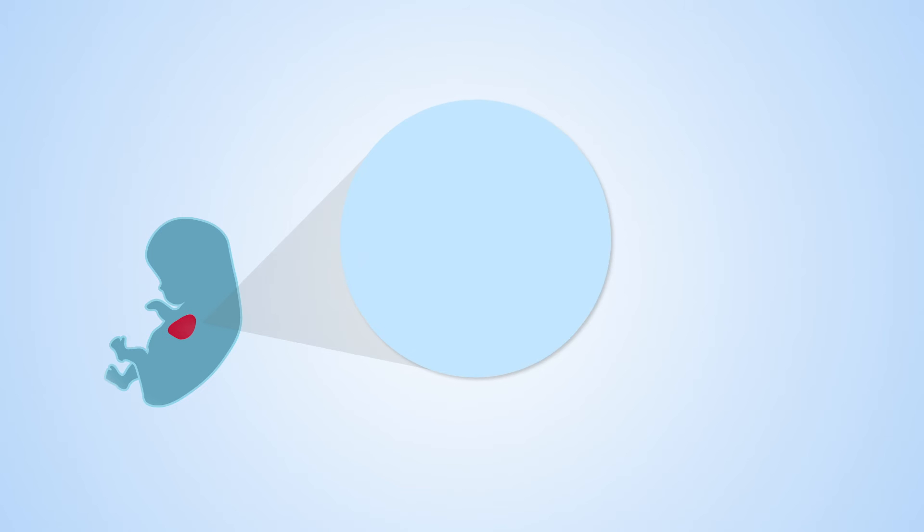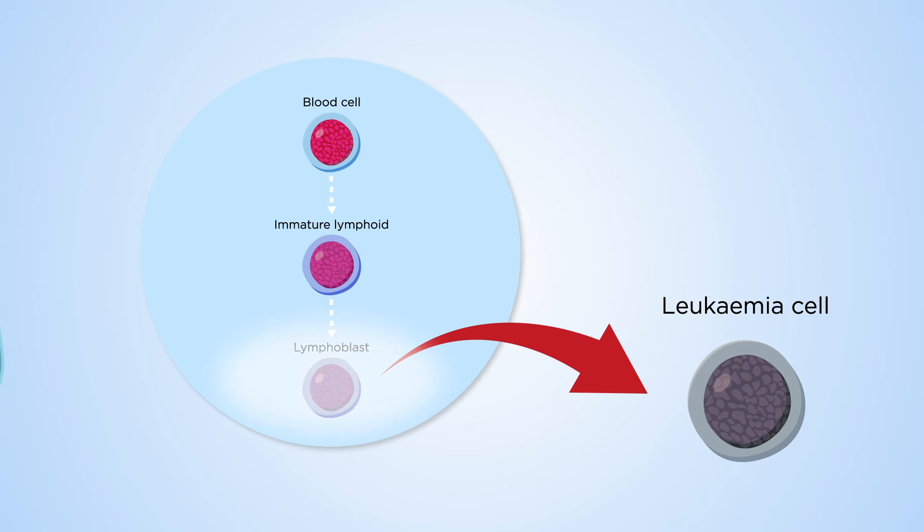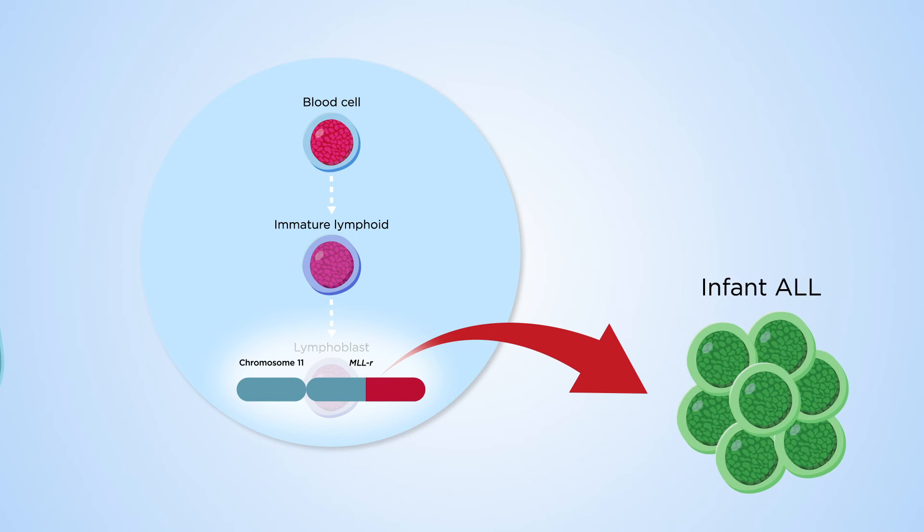Studies indicate that MLL-rearranged infant ALL originates during fetal hematopoiesis. So, how do prenatal blood stem cells provide a better environment for MLL rearrangements to induce infant leukemia?